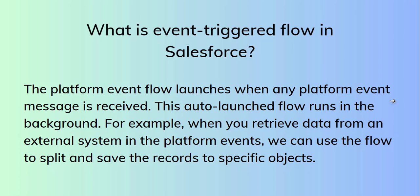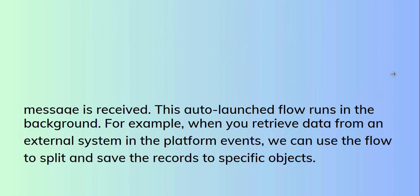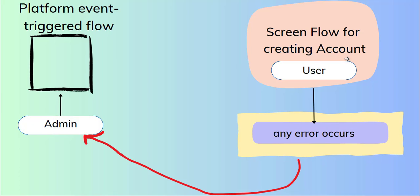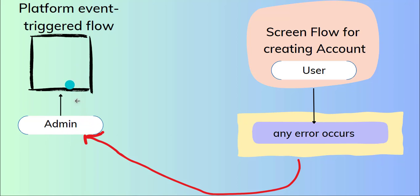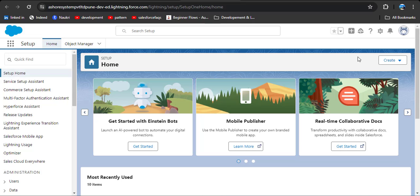Let's better understand with a scenario. A user has created a screen flow for creating an account. While creating records, the user may encounter various errors and issues. Those errors will be reported to the Salesforce admin, making it very difficult to identify all problems and provide a solution at a particular time. For this, they can use a platform event trigger flow to automate the whole process.